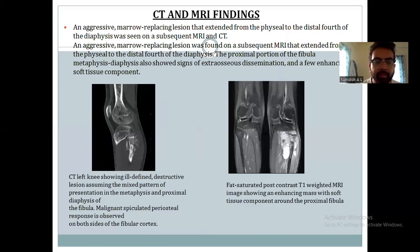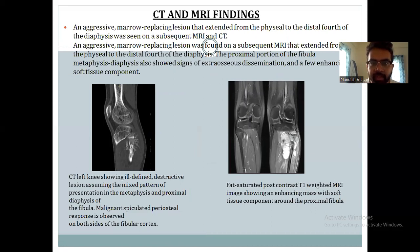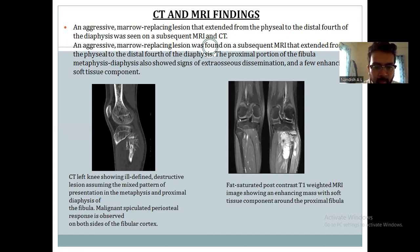Coming to the CT and MRI findings. An aggressive marrow-infiltrative region was seen extending from the physeal region to the distal part of the diaphysis. Subsequent MRI extended from the physeal to the distal diaphysis. The proximal portion of the fibula, including the metaphyseal-diaphyseal region, also showed signs of extraosseous dissemination and a few enhancing soft tissue components. CT findings showed an aggressive destructive lesion with a mixed pattern in the metaphysis and proximal diaphysis of the fibula. Bilobed speculated periosteal response was observed on both sides of the fibular cortex.